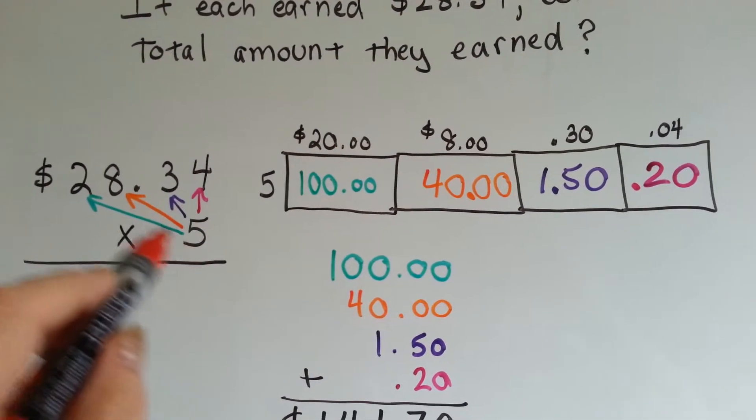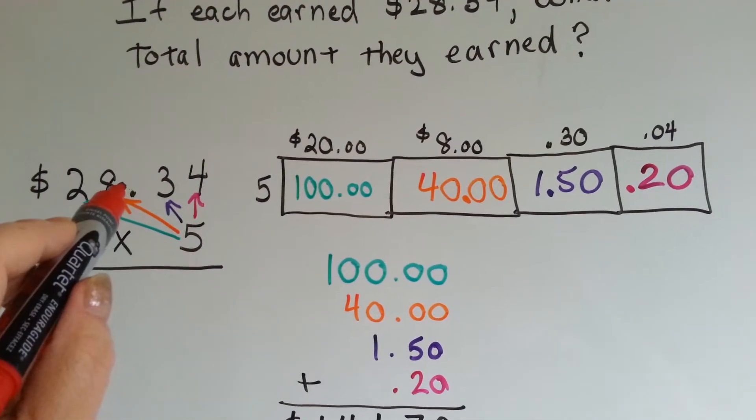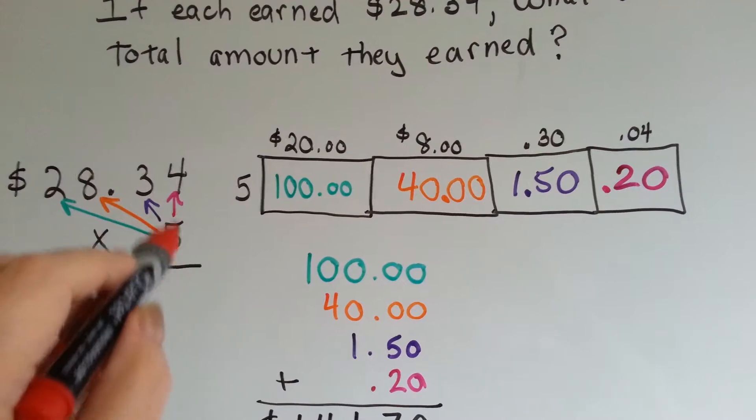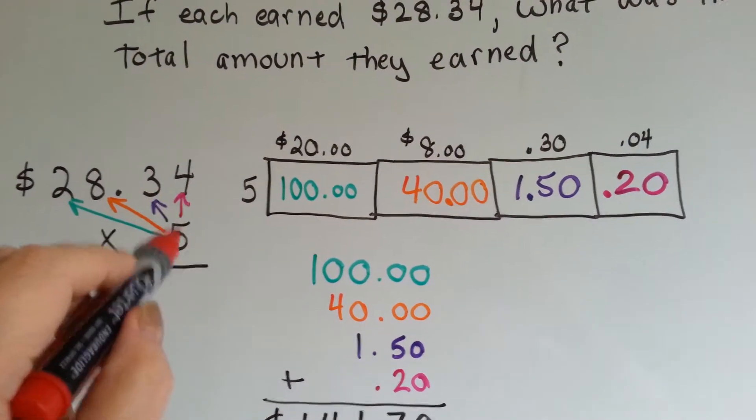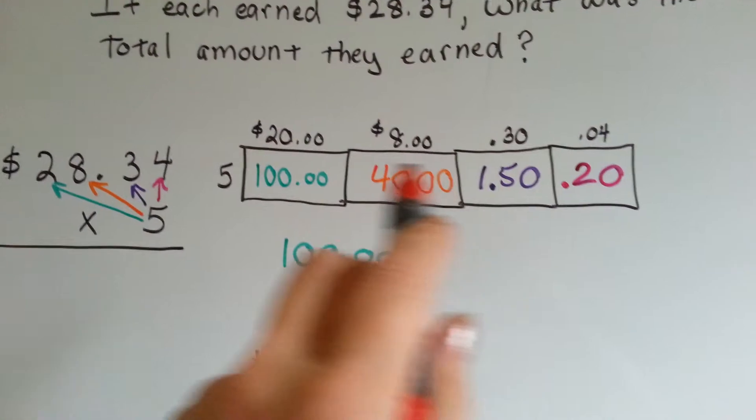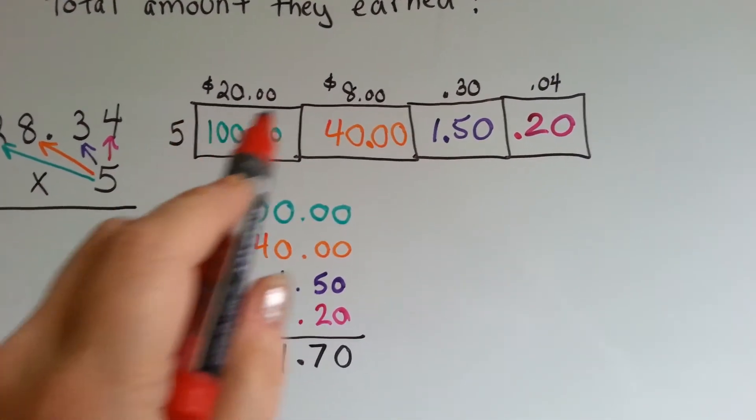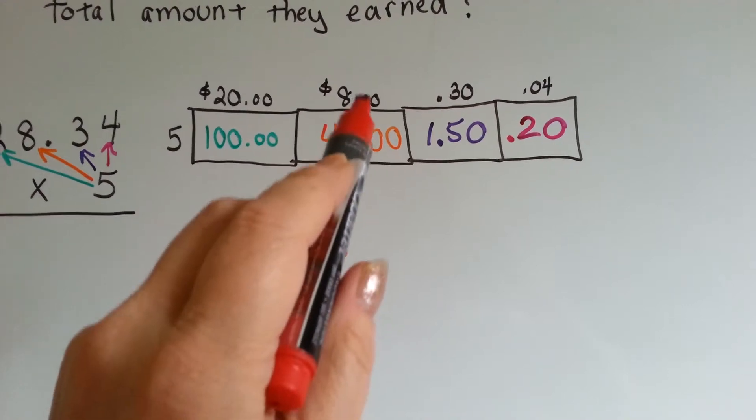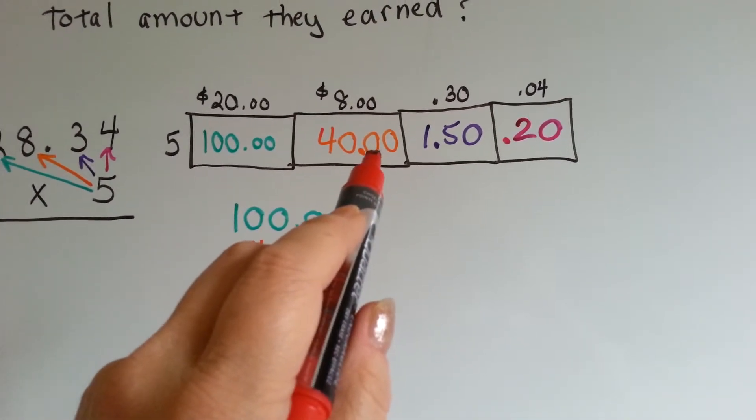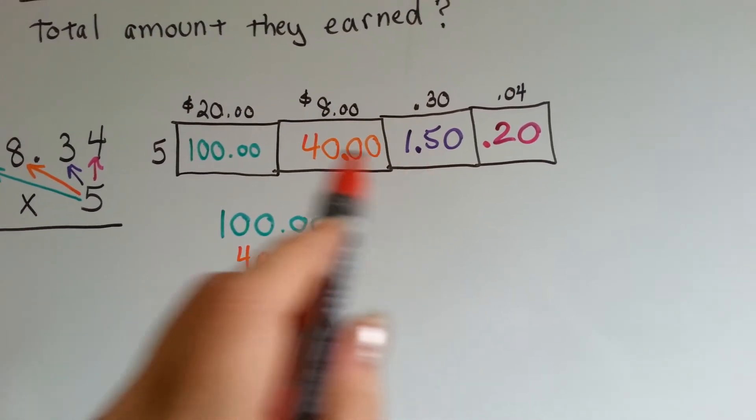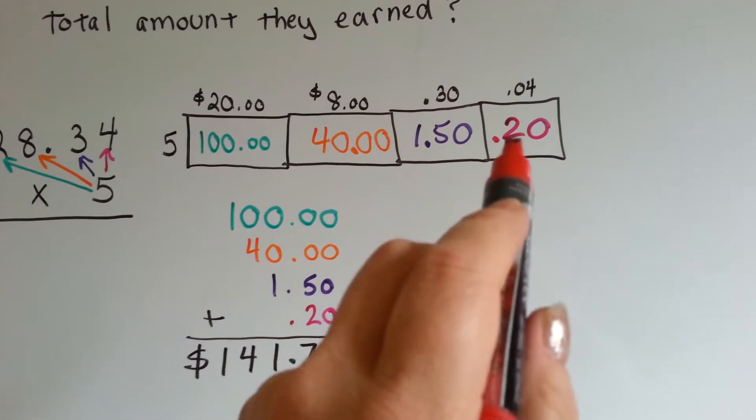So, there's the 5 times the $20. We've got 5 times $8 right here. We've got 5 times 30 cents and 5 times 4 cents. We add them all up. 5 times $20 is $100. 5 times 8 is $40 and add the .00. 5 times 30 cents is $1.50. And 5 times 4 cents is $20.